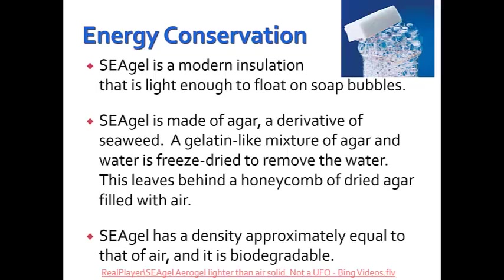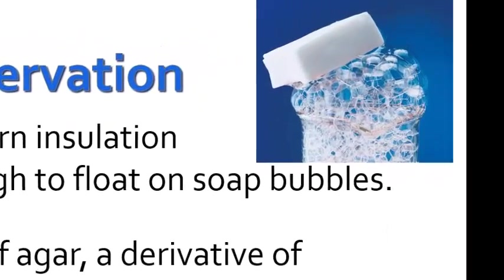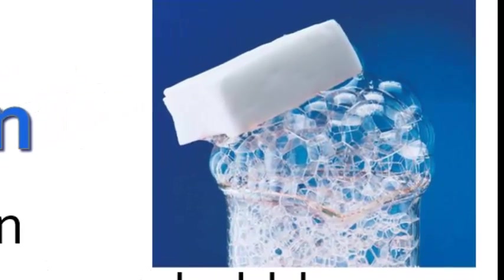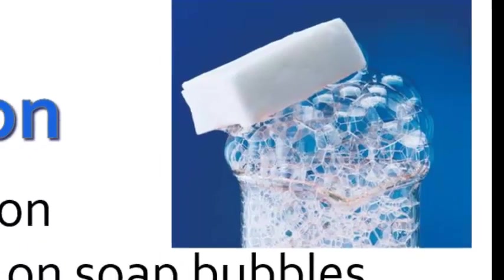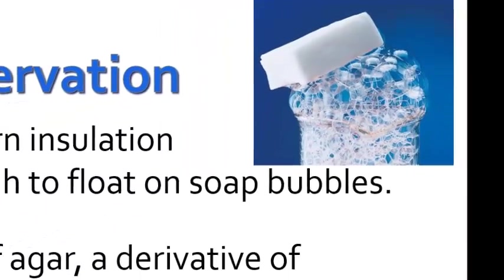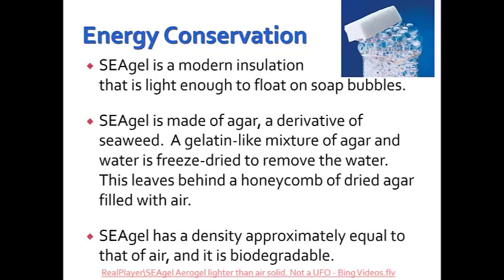Sea gel is a particular type of insulation that's light enough to float on soap bubbles — so here we see a solid floating on soap bubbles. It's made up of agar, a derivative of seaweed. A gelatin-like mixture of agar and water is freeze dried in order to remove the water, leaving behind a honeycomb of dried agar filled with air. Sea gel has a density approximately equal to that of air and it is biodegradable.